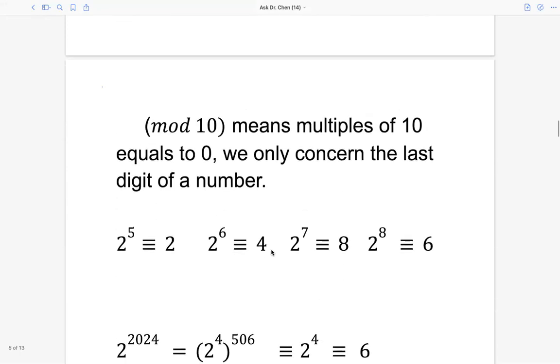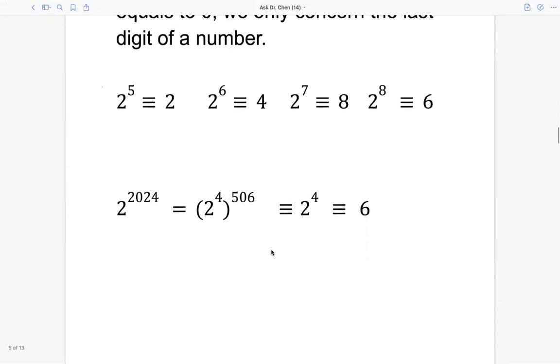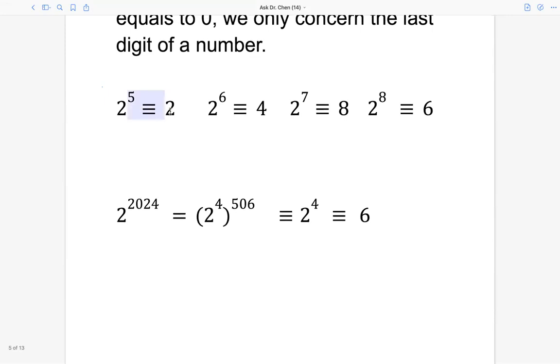So 2024, right, so here 2 raised by 5, last digit is 2. 2 raised by 6, last digit is 4. 2 raised by 7, last digit is 8. 2 raised by 8, last digit is 6.